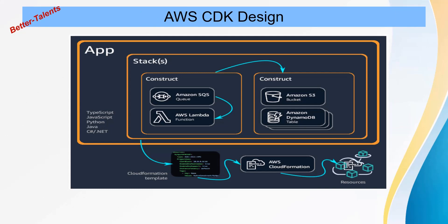Looking at the AWS CDK design, you can see how you assemble a CDK application. For example, you can have one construct made of SQS and Lambda, where Lambda is pulling from SQS to process messages. Similarly, you can have another construct for data storage combining S3 and DynamoDB, since those are related services.